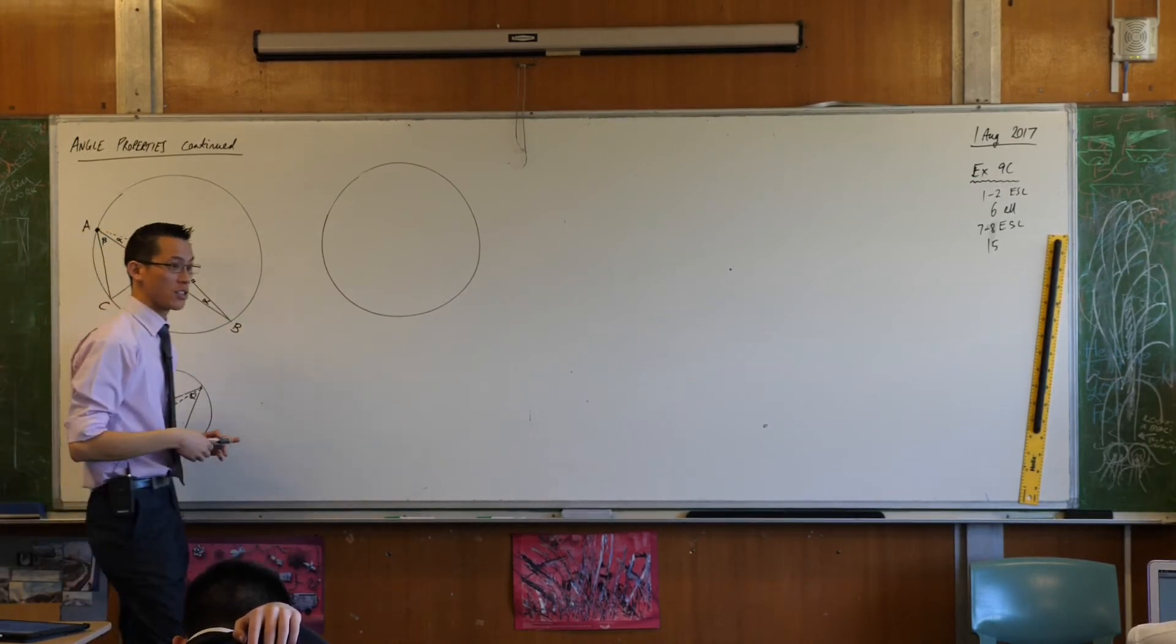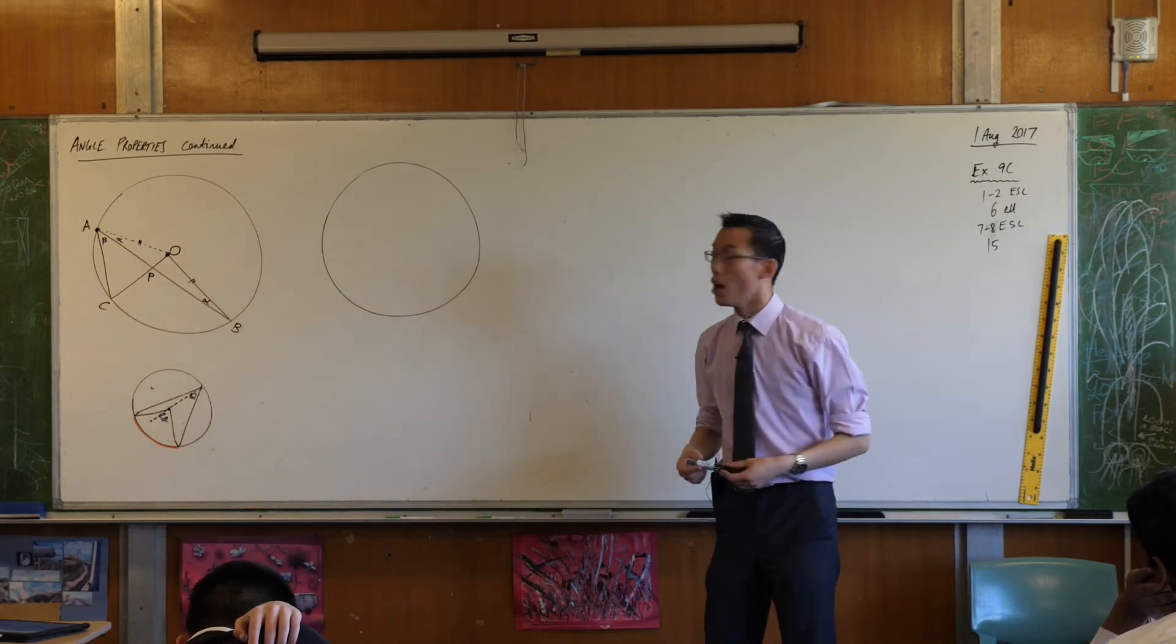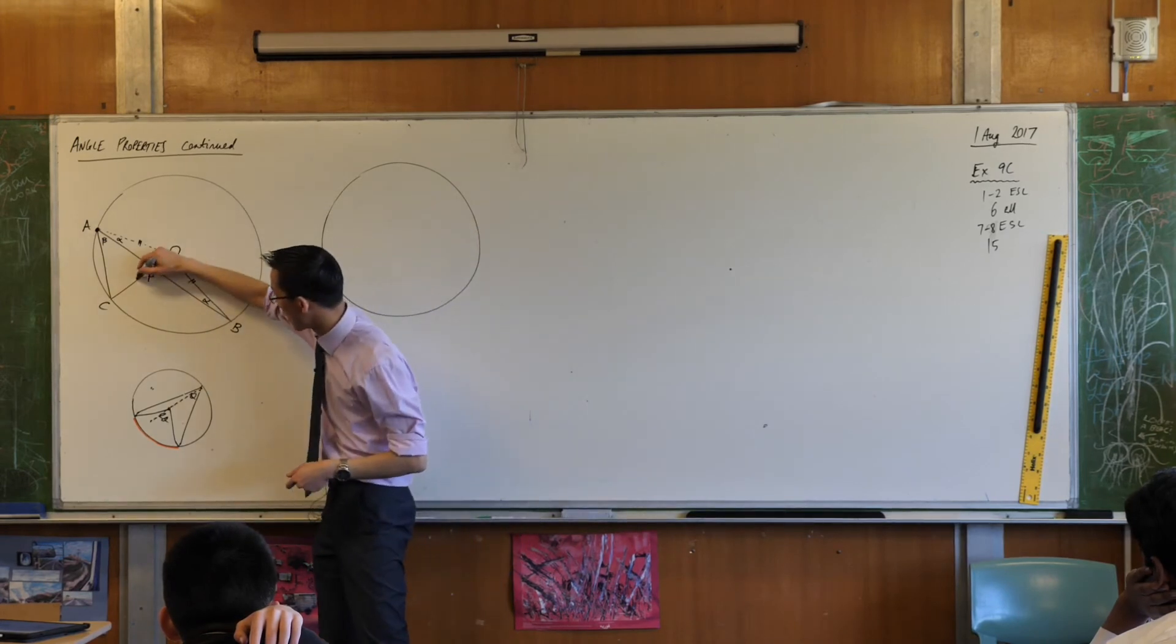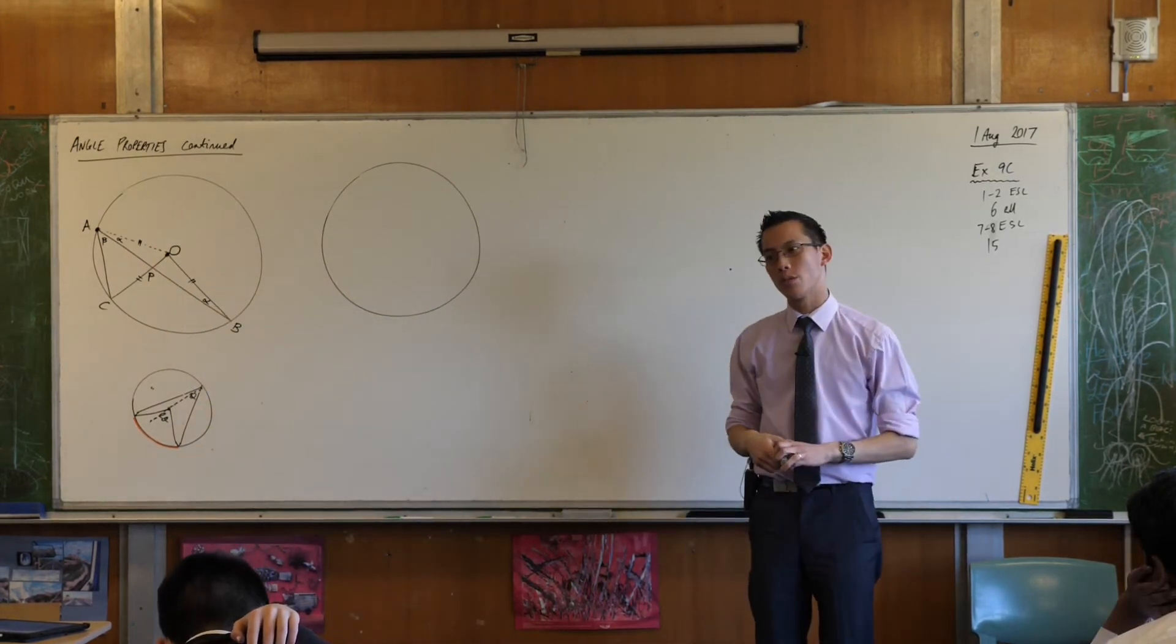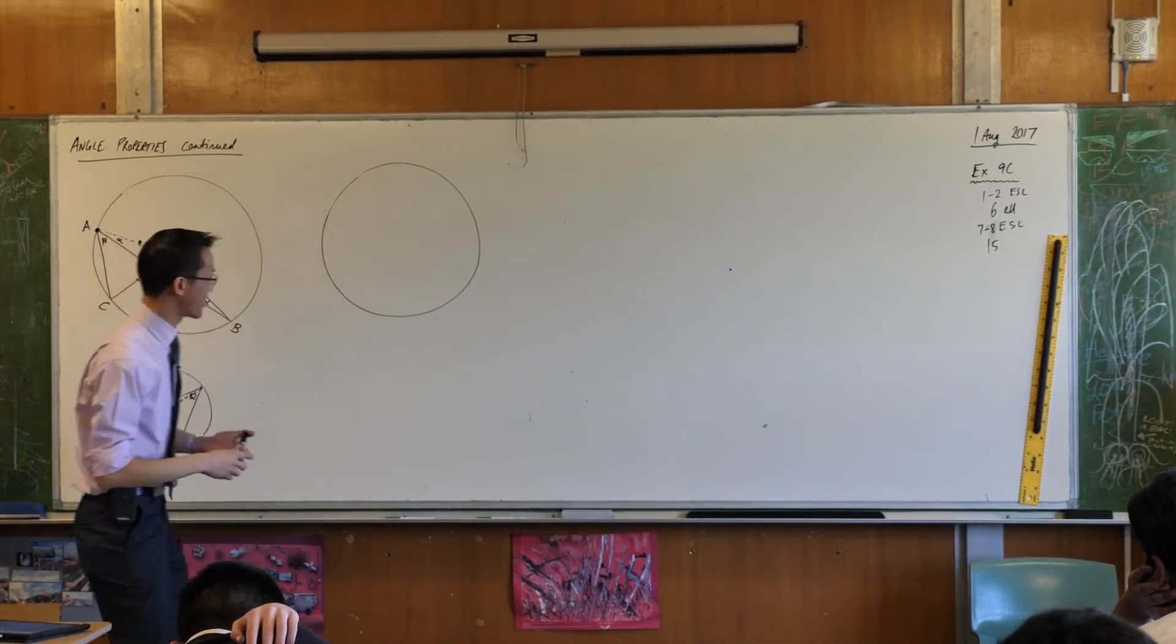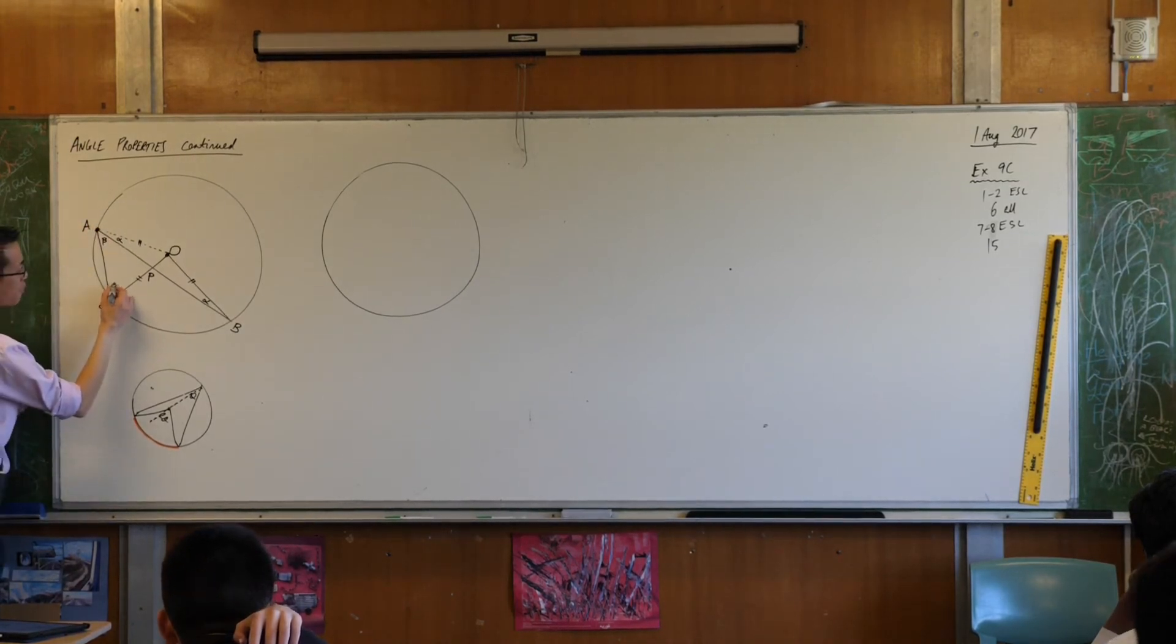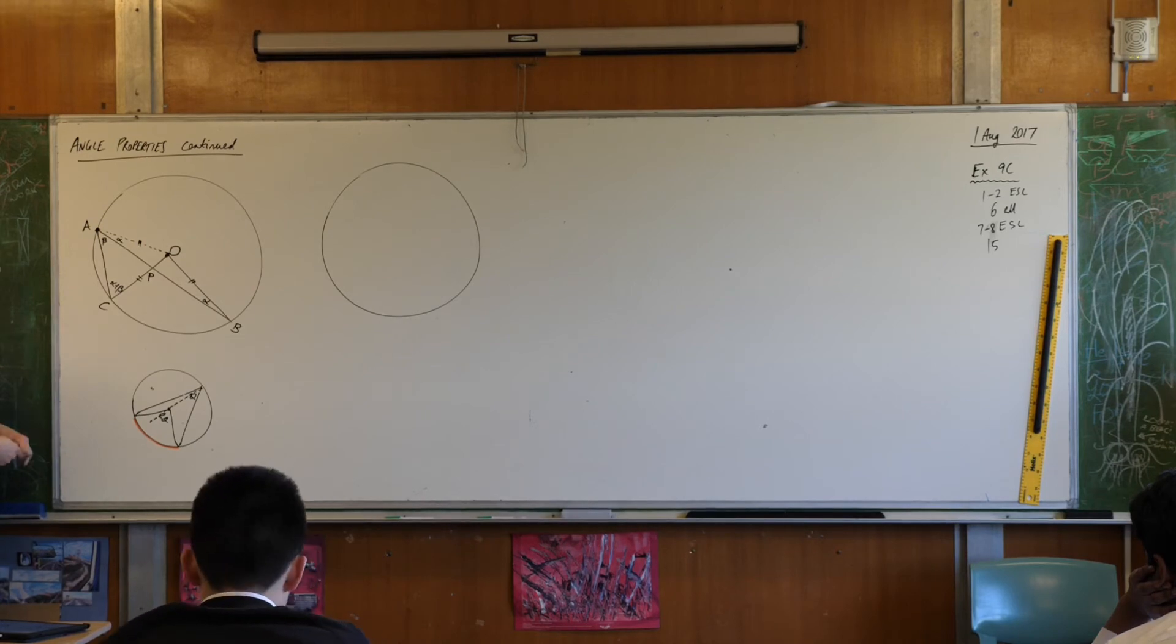There's another isosceles triangle in there, can you tell me where it is? O, A and O, C. O, A and O, C, also radii, so in fact I can mark in that as equal. So what would be the pair of equal angles that matches that pair of equal sides? So you've got alpha plus beta in this corner, which means you get alpha plus beta in this corner.